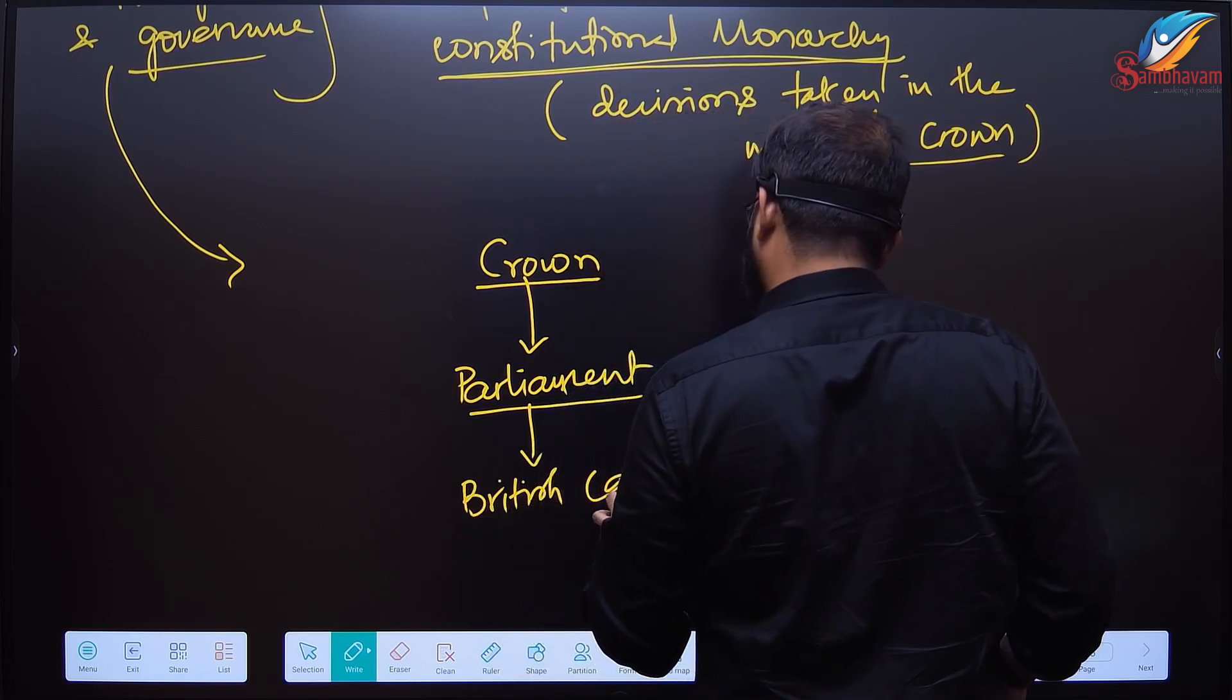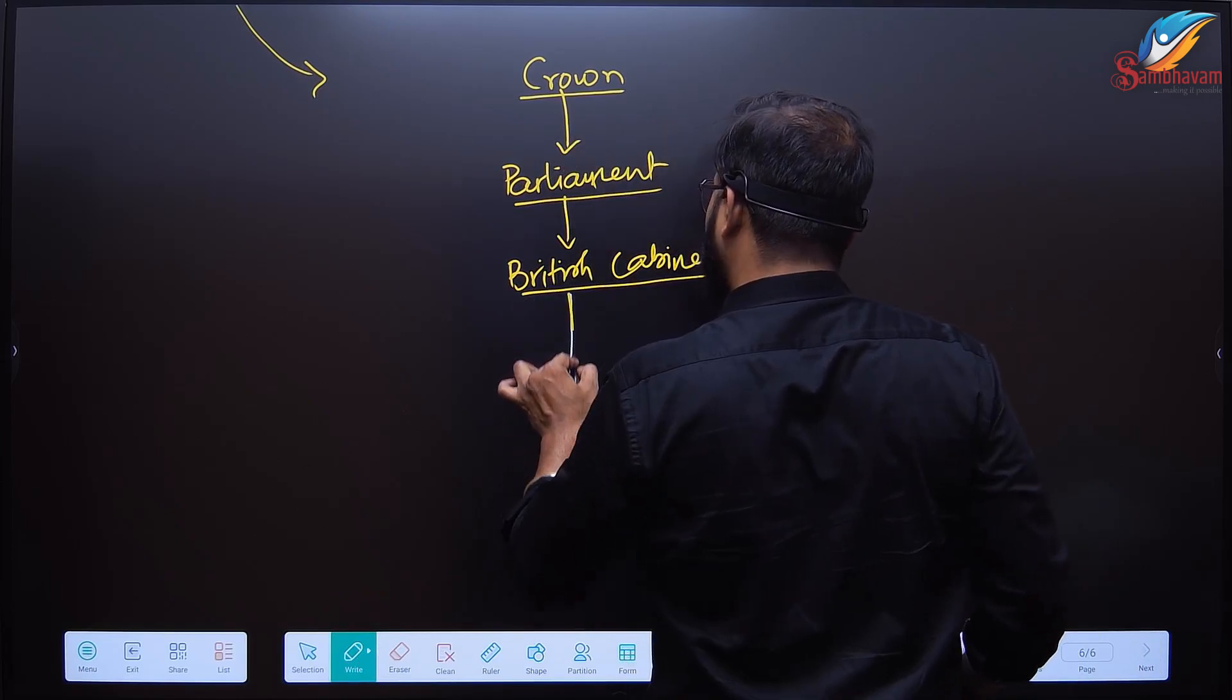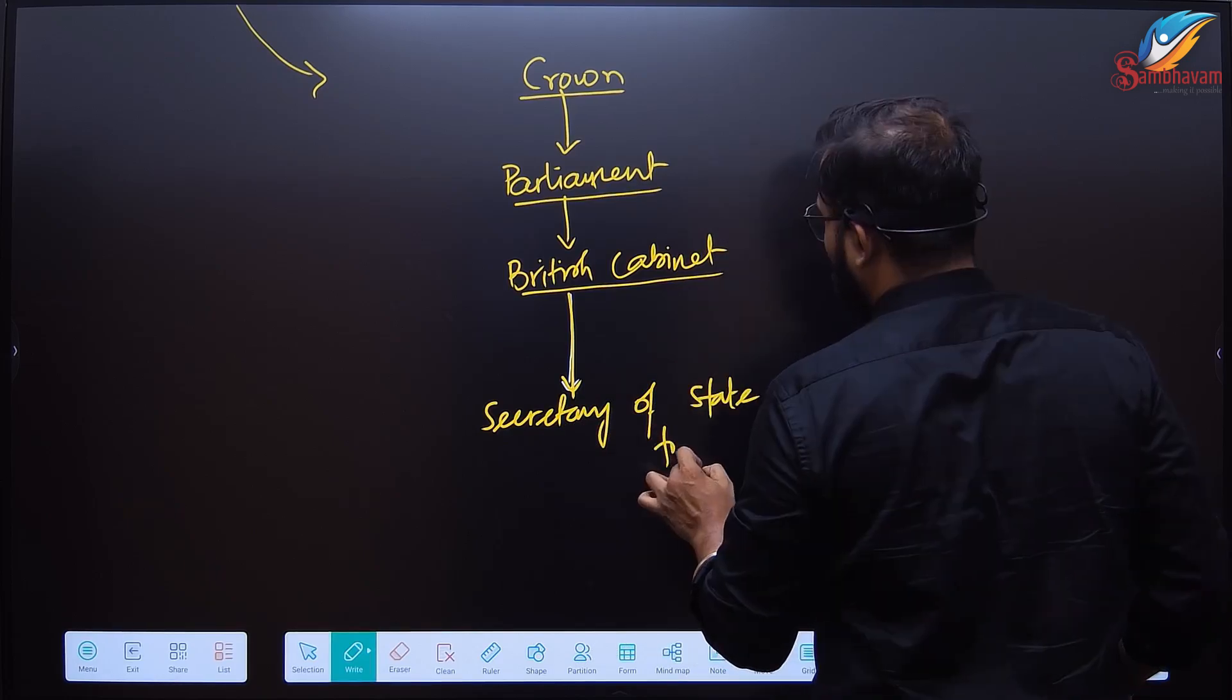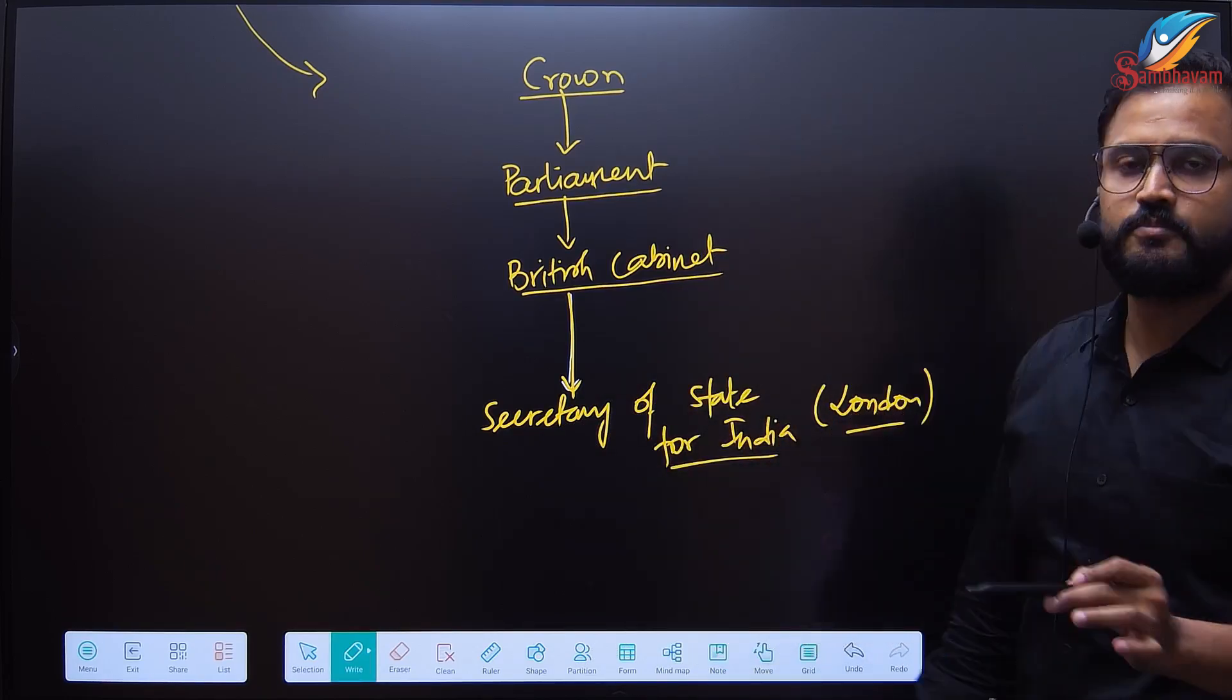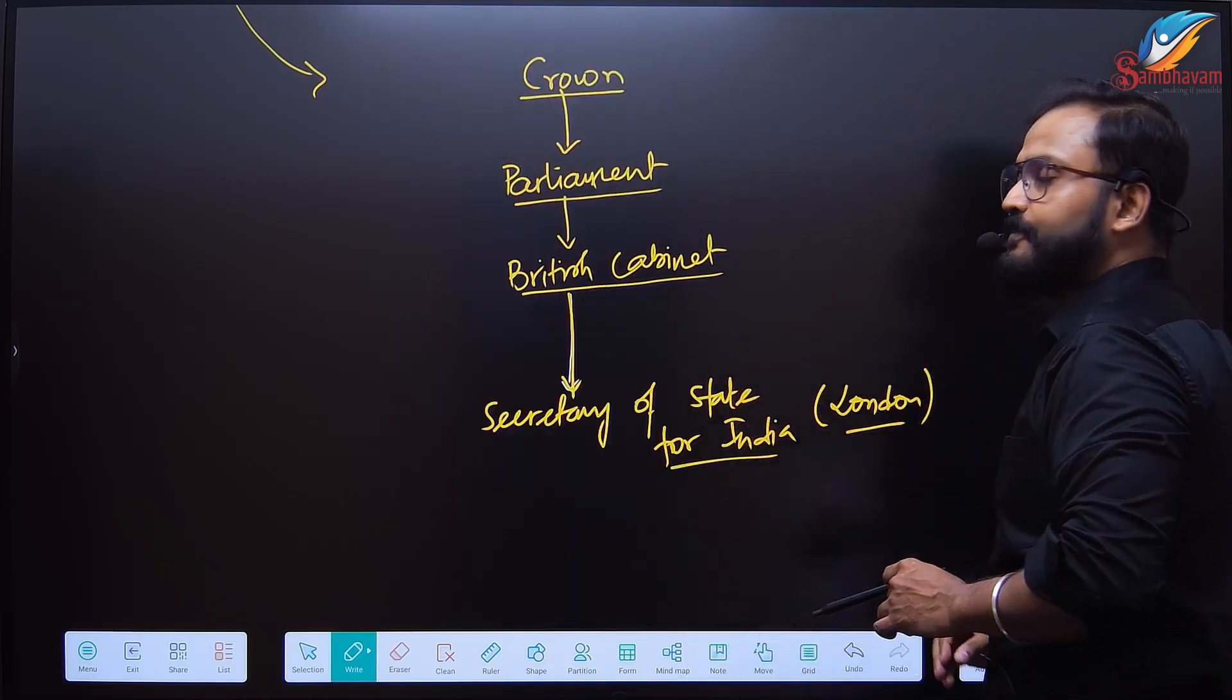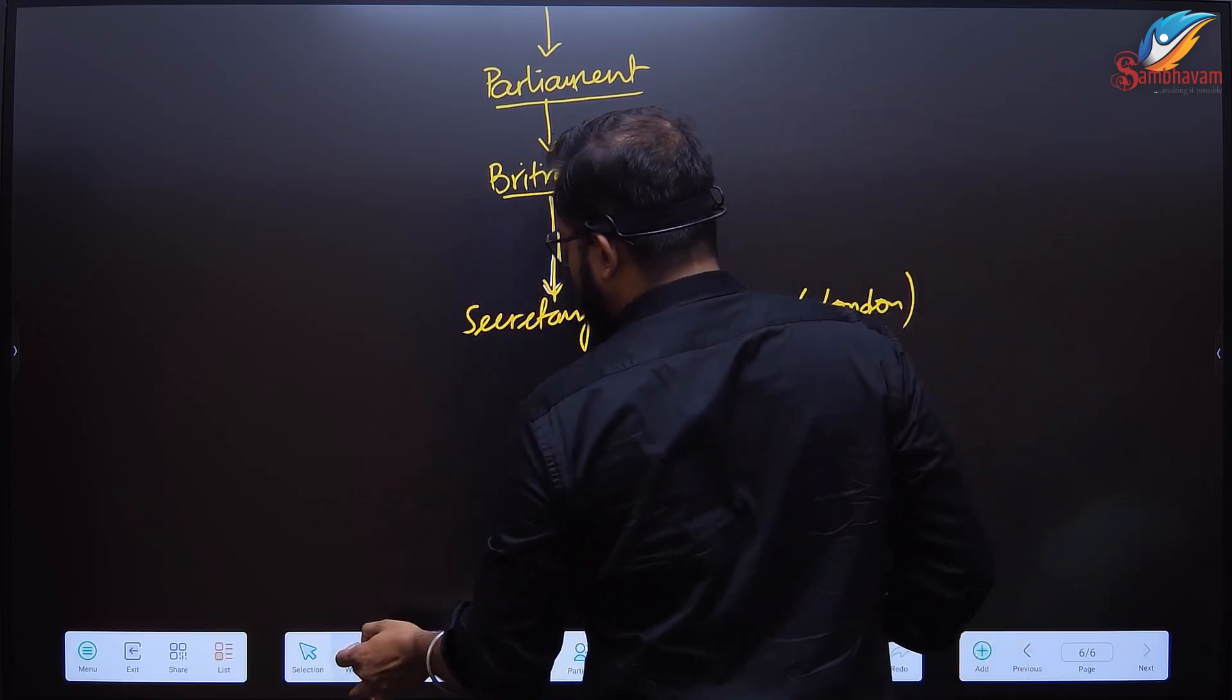Within the British Cabinet there will be a particular minister known as the Secretary of State for India. Where is he stationed? In London, of course, Westminster Abbey. Secretary of State for India in London.